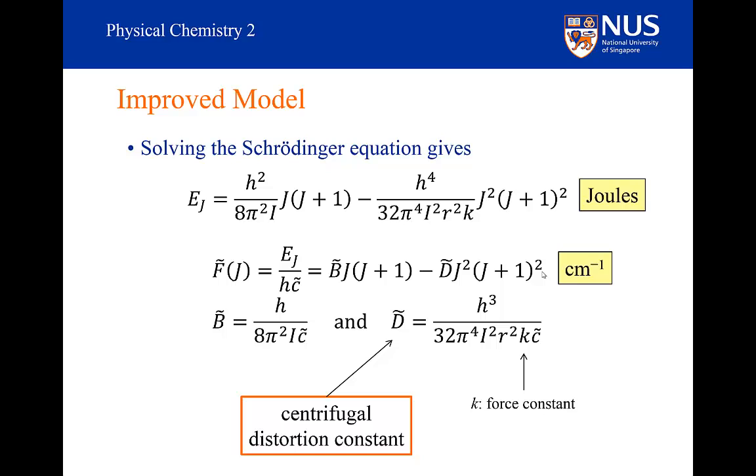If it is very stiff, I'd have a large force constant. The centrifugal distortion would therefore be very small, so it won't affect the energy very much. The stiffer the bond, the closer it is to my rigid approximation.